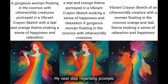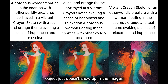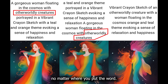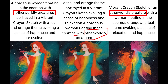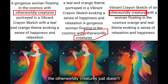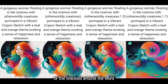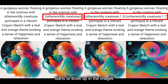My next tip regarding prompts is that you emphasize on the words you want to show up in the images. Sometimes no matter how much you try, the object just doesn't show up no matter where you put the word. Like in this example — 'a gorgeous woman floating in the cosmos with otherworldly creatures' — the otherworldly creatures just don't show up in the first image. But as soon as I start emphasizing on the word by applying parentheses or brackets around it, the creature starts to show up.